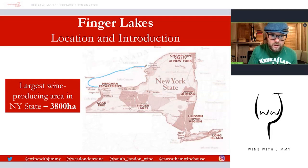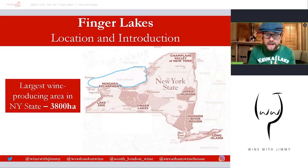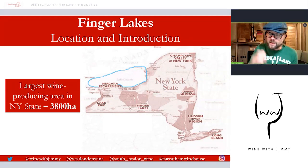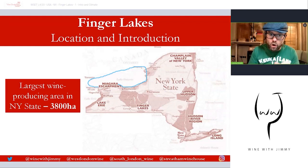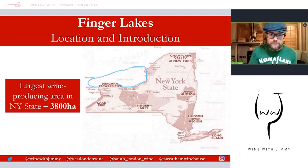The Finger Lakes region is just east of Buffalo and directly south of Lake Ontario, a very deep and voluminous lake that forms the natural border with Canada. This upstate New York wine region is the largest wine-producing area in New York State, with around 3,800 hectares under vine, including both Vitis vinifera and other Vitis species and hybrids.